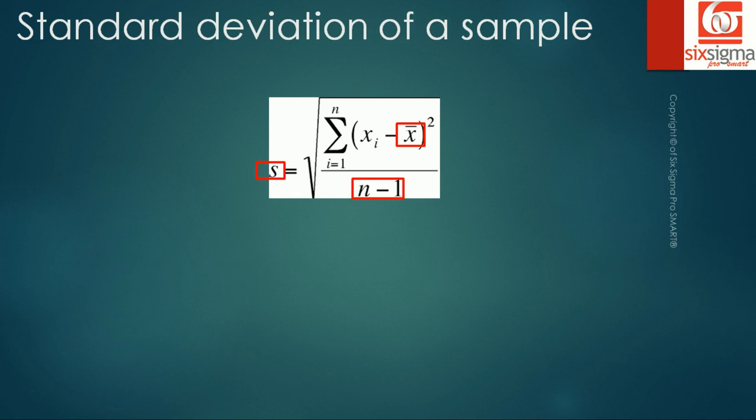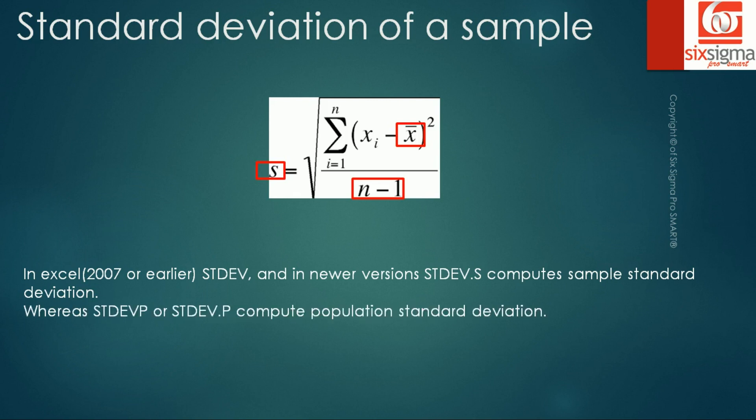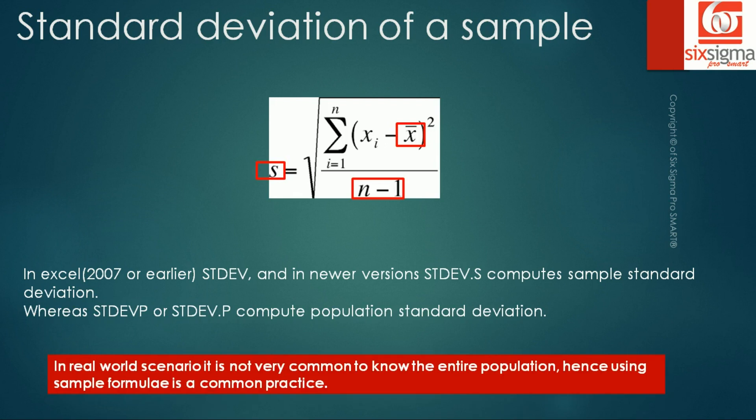In real world, most of the times we will never be computing standard deviation manually. Therefore, while using software, the most popular of which is Microsoft Excel, you need to notice that there are different formulas for different standard deviations. In Excel 2007 or earlier, STDEV, and in newer versions, STDEV.S computes sample standard deviation, whereas STDEVP or STDEV.P computes population standard deviation. In real world scenario, it is not very common to know the entire population. Hence, using sample formula is a common practice.